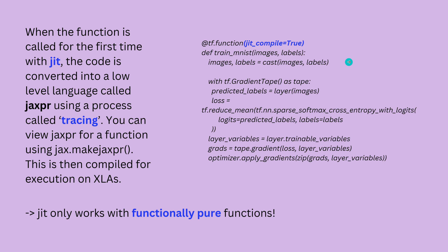Just to show you how easy it is: you have a simple AI, you train it on MNIST, you have your decorator for the TensorFlow function, and you just say jit_compile=True. You have your normal training function, your gradient tape, you reduce softmax cross entropy, your large JIT, your trainable variables, the tape gradient, the optimizer — everything. And you just say in your decorator jit_compile=True.